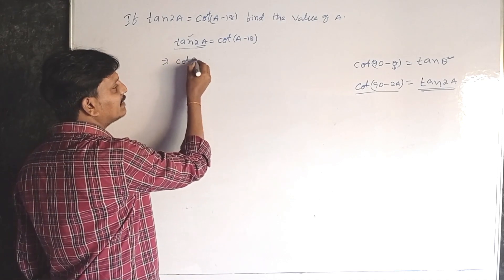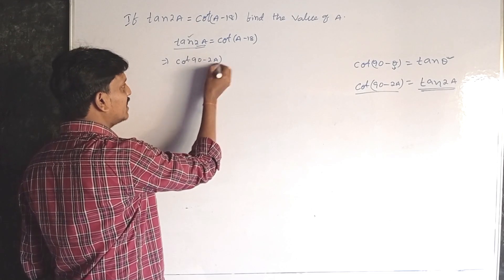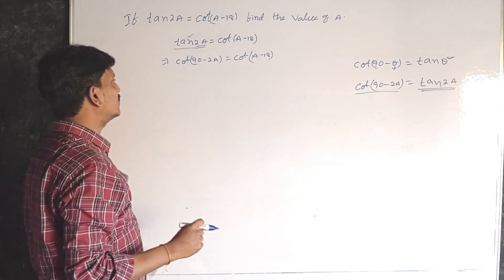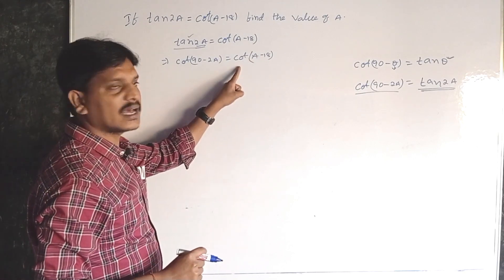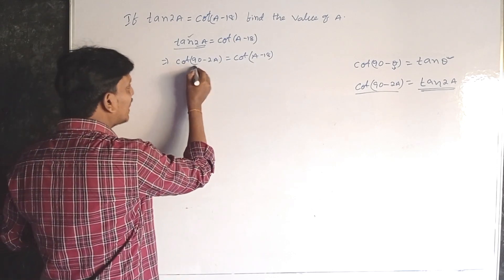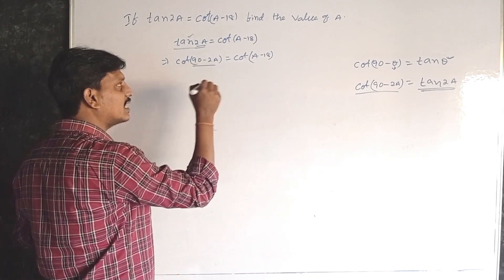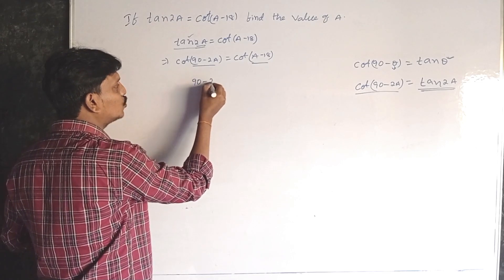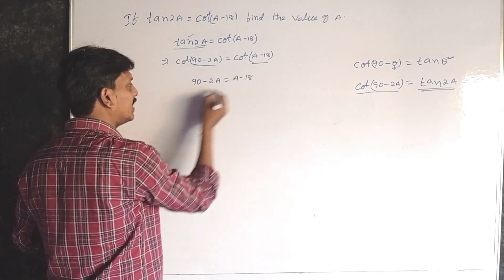Both LHS and RHS are equal ratio, cot and cot. That means 90 minus 2a is equal to a minus 18. So 90 minus 2a is equal to a minus 18.